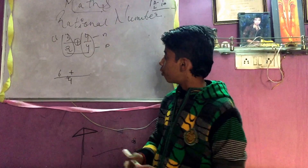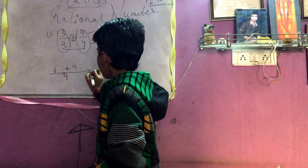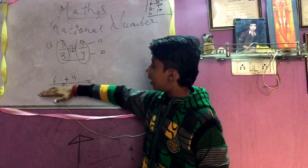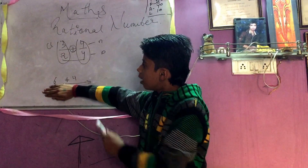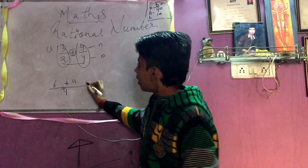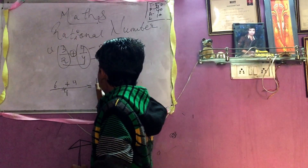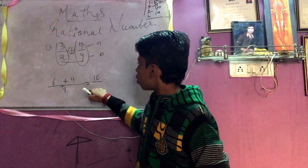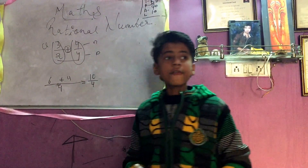Now you have to add the numerators — don't worry about the denominator for now. Just add: six plus four equals ten. Then place the denominator four below, giving you ten upon four.